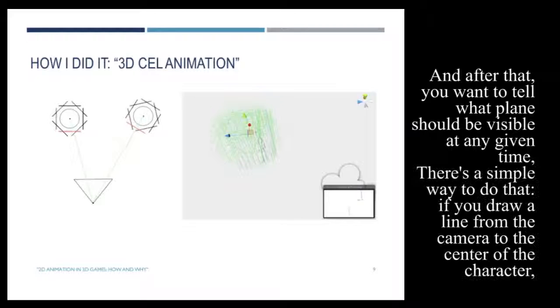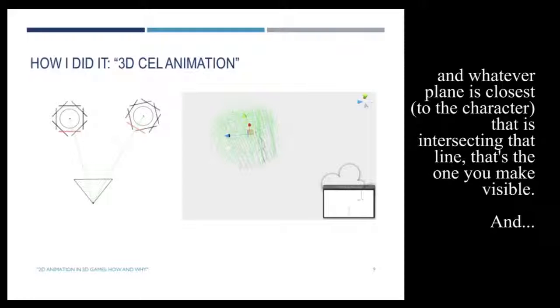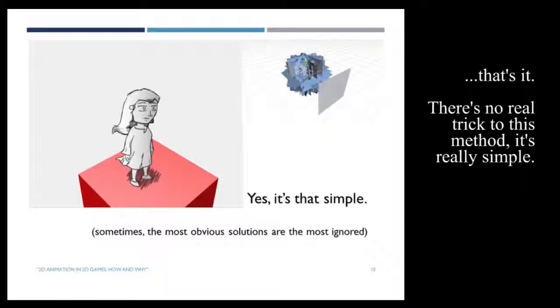After that, you want to tell what plane should be visible at any given time. There's a simple way to do that. If you draw a line from the camera to the center of the character, whatever plane is closest that's intersecting that line, that's the one you make visible. And that's it.